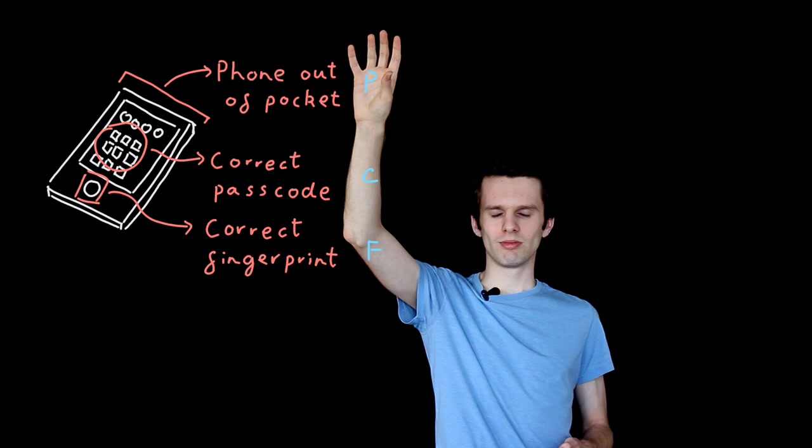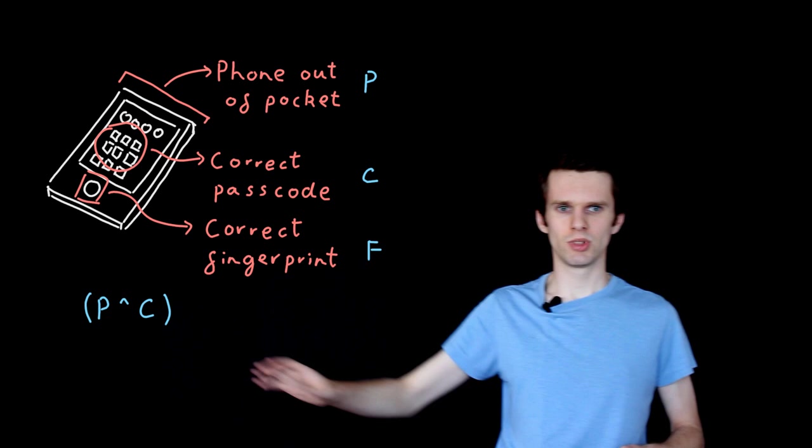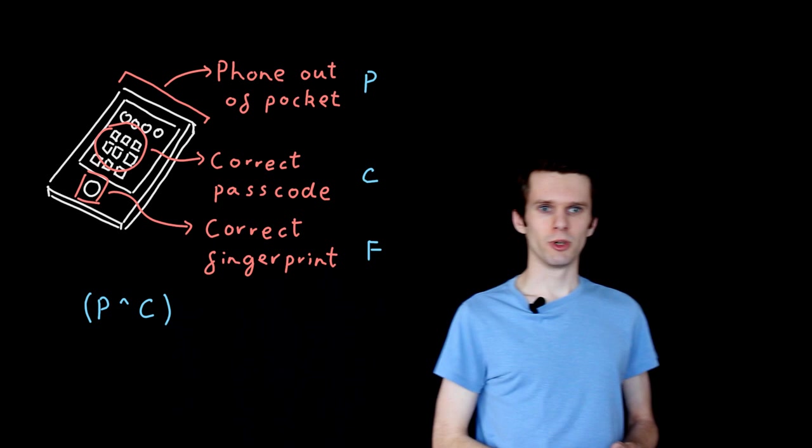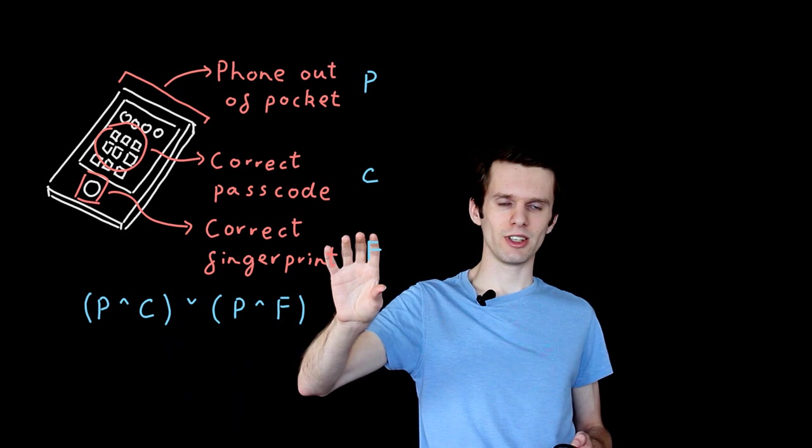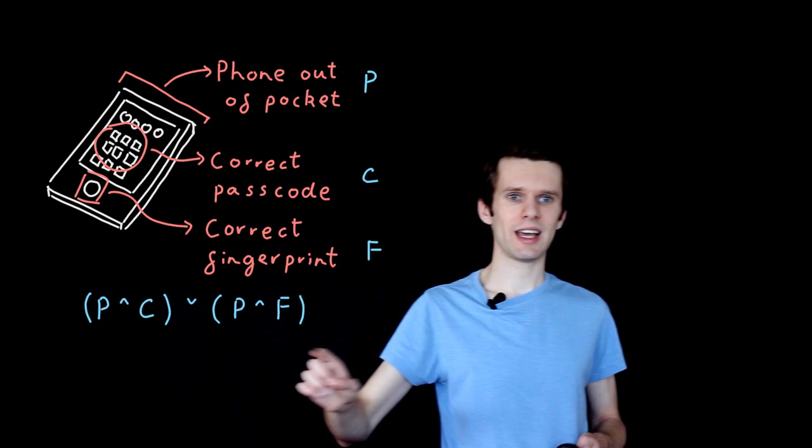So what's the propositional sentence which tells us whether the phone ought to be unlocked or not? First of all, the phone has to be out of the user's pocket, and they also have to enter their passcode correctly. So we have the sentence P and C. There's also the possibility that the phone is out of the user's pocket, but instead they use their fingerprint. So now we add on OR P and F.